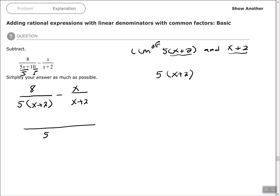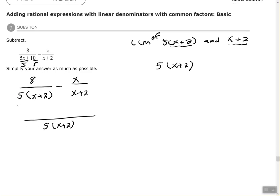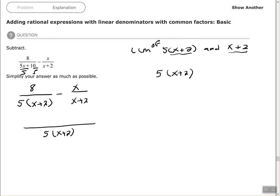Comparing my original denominator 5 times x plus 2 to my common denominator, it's exactly the same. That tells me I multiply by 1, so 8 times 1, because the denominator is already what we need.